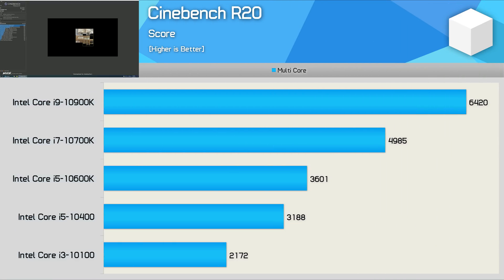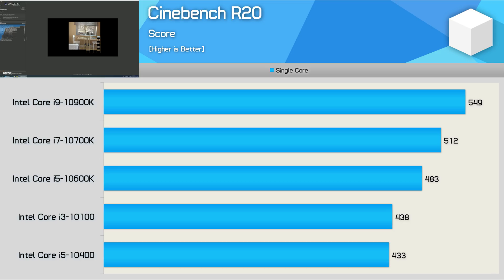Starting with Cinebench R20, the 10400 is just shy of 50% faster than the 10100, which makes sense given the i5 packs 50% more cores at similar clock speeds. There's a 13% jump from the 10400 to the 10600K, and then nearly a 40% increase going from the 10600K to the 10700K — largely due to the 33% increase in core count, with the i7 clocked around 6% higher. The 10900K delivers another 29% increase, as core count rose by 25% with similar clock speeds. For single-core performance, the 10900K leads, beating the 10700K by 7% and the 10600K by 14%, while the 10100 and 10400 were comparable.